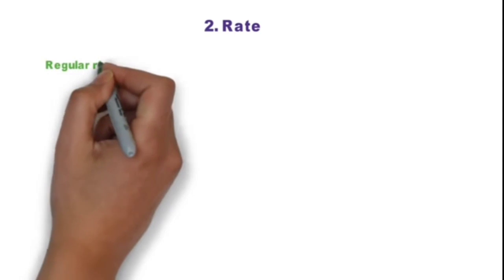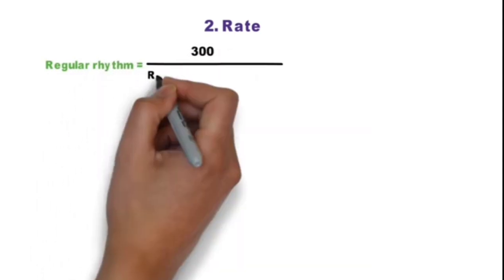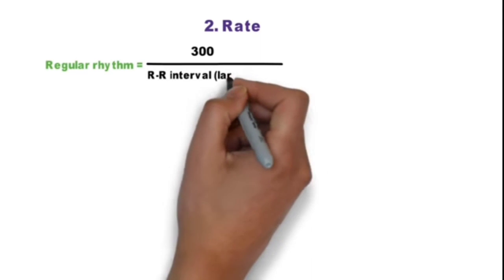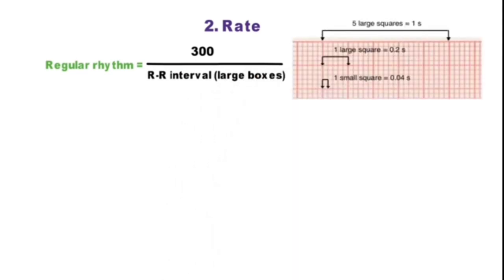Second step is to calculate rate from ECG. If rhythm is regular, heart rate is calculated by 300 divided by large boxes between RR interval. One small square is equal to 0.04 second and one big square is equal to 0.2 second. So 5 large squares is equal to 1 second.